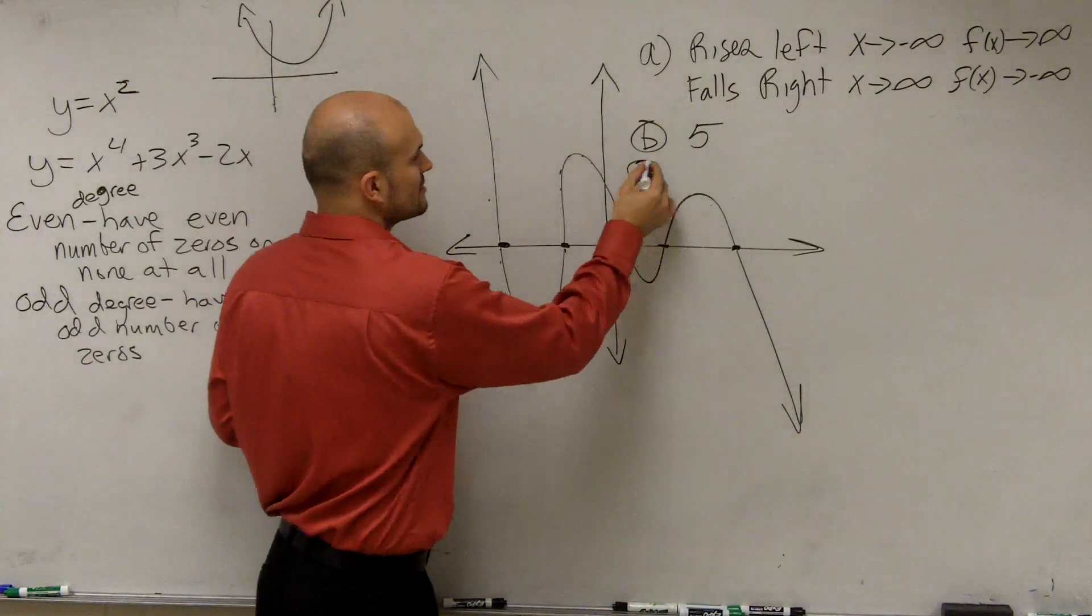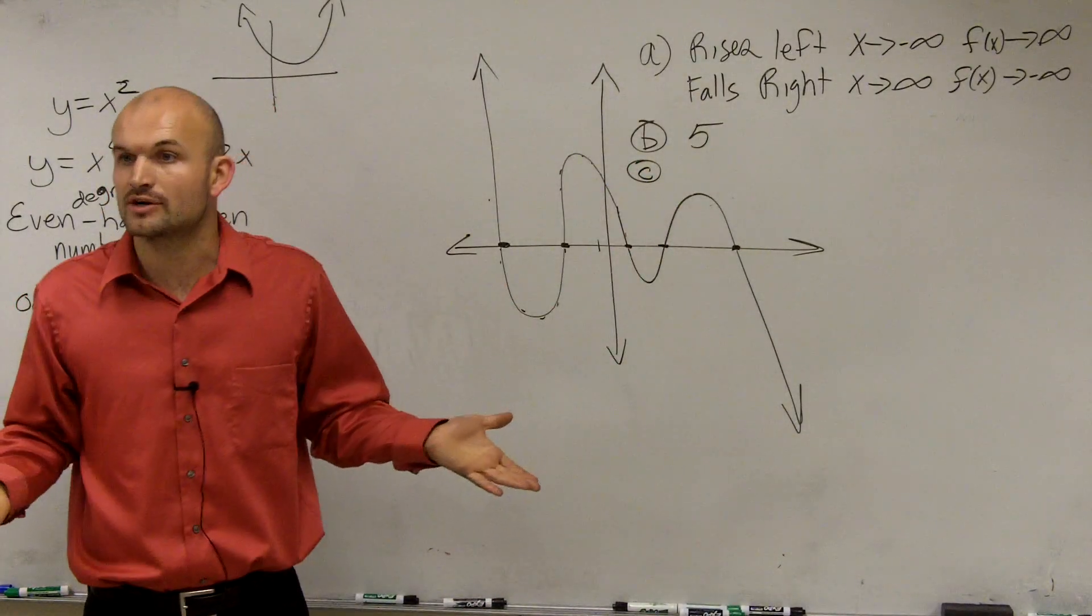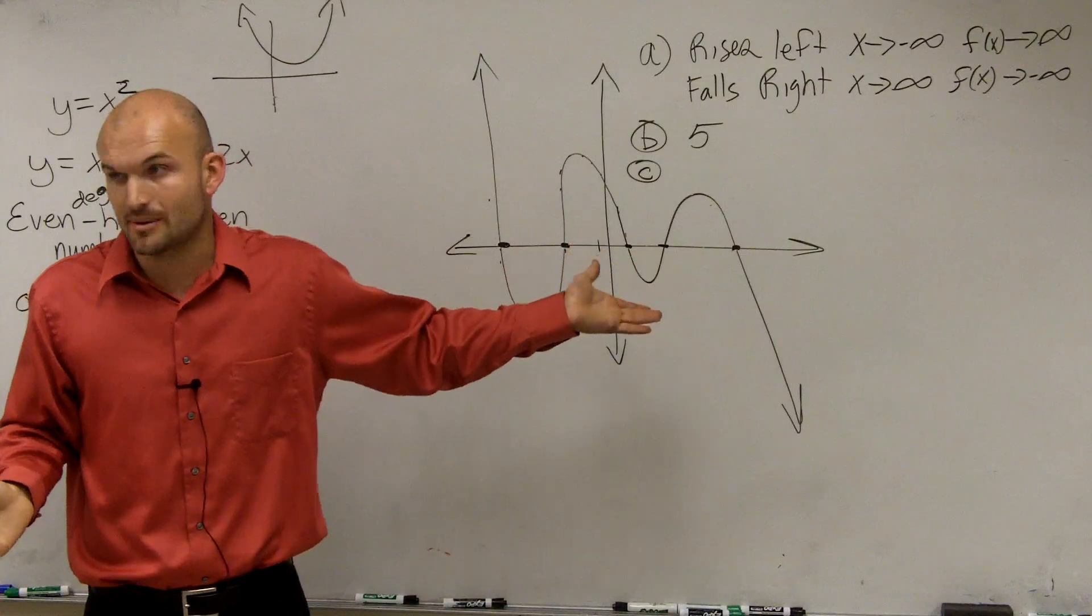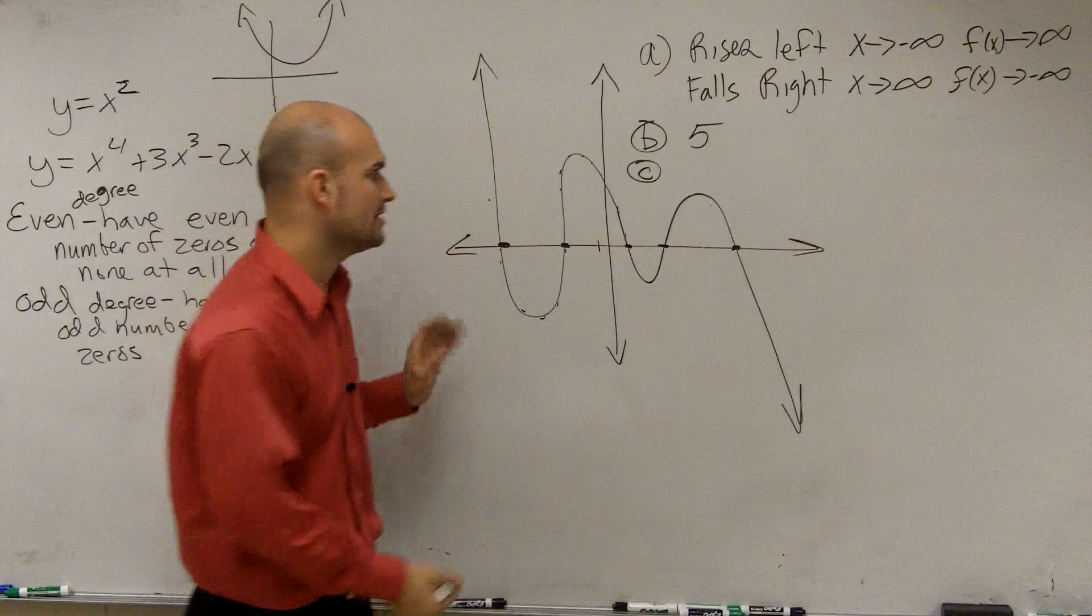And then the last part is to estimate, do we have an odd degree function or an even degree function? Well, since we have five roots, that means it has an odd number of zeros. Therefore, our function has to be of odd degree.